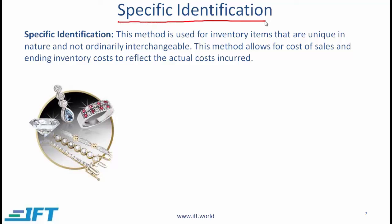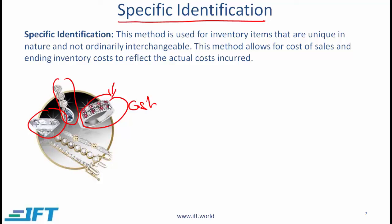Let's start with the method called specific identification. This method is used for inventory items that are unique in nature and not ordinarily interchangeable, and it allows cost of sales and ending inventory to reflect actual costs incurred. So if you sell jewelry, you would keep track of every item individually — this particular ring will have a particular cost tagged with a particular ID, and when this ring is sold, the cost is the cost of that specific ring. This method applies where inventory cost is high and items are not interchangeable.